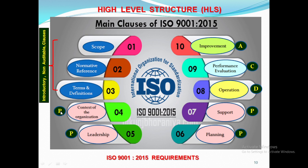Clauses 4 to 10 are integrated with the PDCA cycle — Plan, Do, Check, and Act. Clauses 4 to 7, covering context of organization, leadership, planning and support, come under Plan. Clause 8, operation, comes under Do. Clause 9, performance evaluation, comes under Check. And clause 10, improvement, comes under Act.